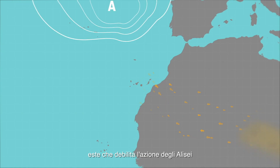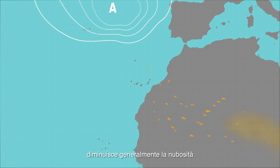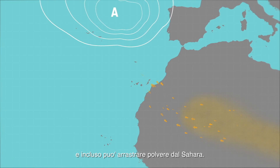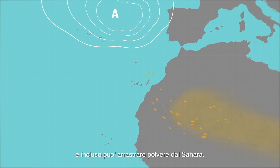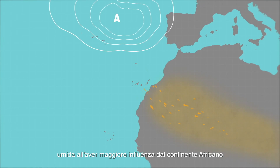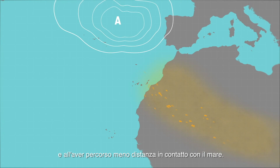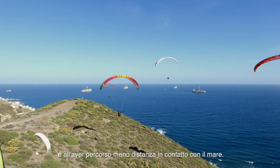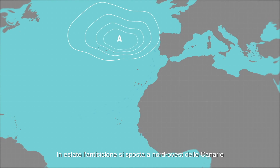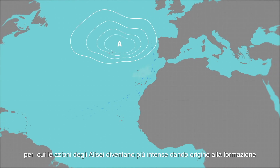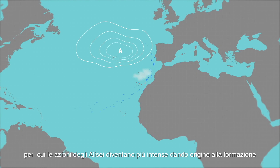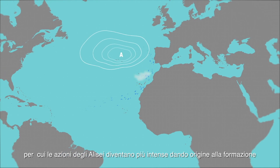In this case, a wind regime with an east to southeast component appears, weakening the action of the trade winds, reducing cloudiness, and even dragging suspended dust particles from the Sahara. This is due to the air mass being less humid because of the African influence and the short distance traveled in contact with the sea. In summer, the anticyclone moves to the northwest of the Canary Islands in the Azores, generating more intense trade winds and lifting up a sea of clouds.